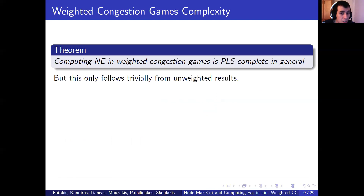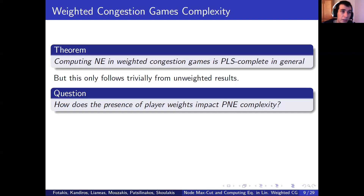Specifically, there are many cases of unweighted congestion games where an equilibrium can be computed efficiently and very easily, while the algorithms used do not generalize for weighted congestion games. At the same time, there are no hardness results for this special case of weighted congestion games. In this work, we aim to cover this gap by examining the exact impact of the presence of player weights on the complexity of pure Nash equilibrium.